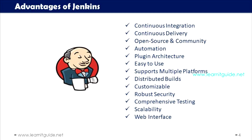Another advantage of Jenkins is its plugin architecture. Jenkins offers a vast ecosystem of plugins that extend its functionality. These plugins help integrate Jenkins with various tools, technologies, and platforms. For example, if you have Ansible, Docker, Kubernetes, or any other technologies, they can be integrated with Jenkins through these plugins. Jenkins is also very easy to use — it provides a user-friendly web-based interface that simplifies configuration and job management.